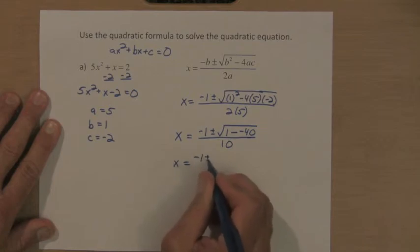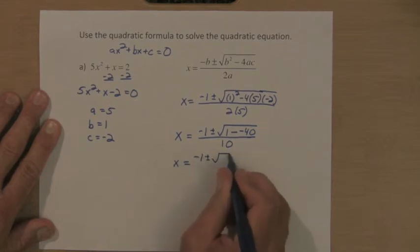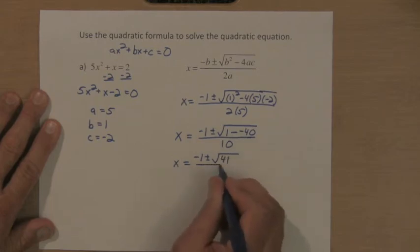So I have negative 1, x equals negative 1, plus or minus the square root of 1 minus a negative 40 is 41, all over 10.